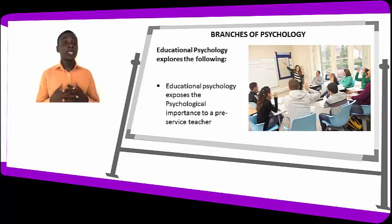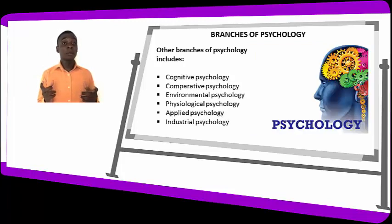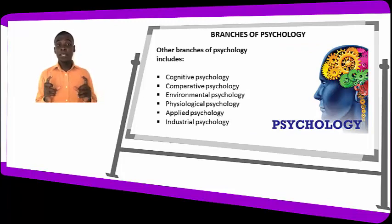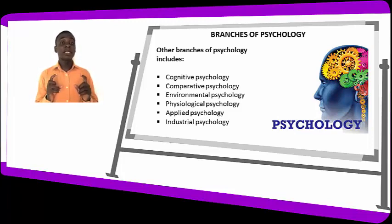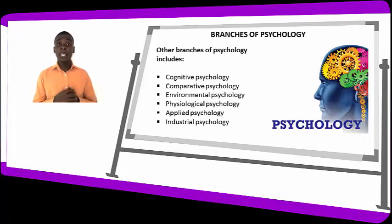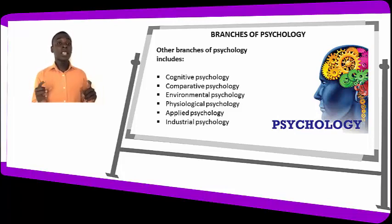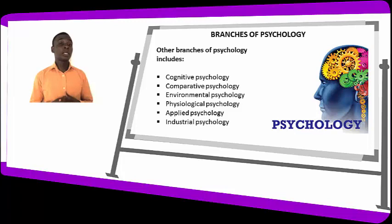Other branches of psychology include cognitive psychology, comparative psychology, environmental psychology, physiological psychology, applied psychology, and industrial psychology. These additional branches are not explained in detail in this lesson, but they exist as other important branches of psychology.